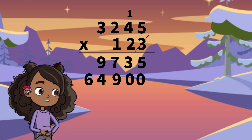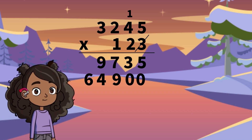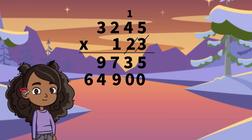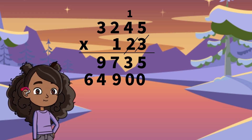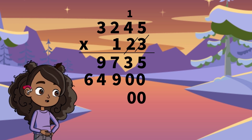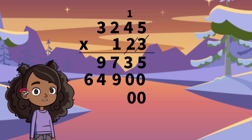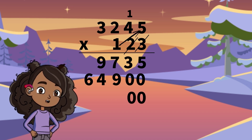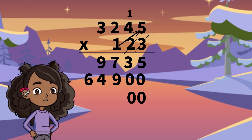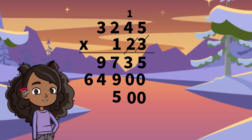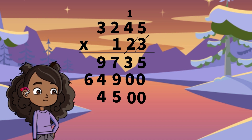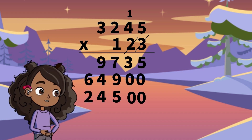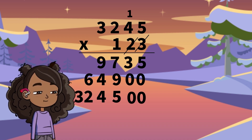We are now moving on to our next digit 1. 1 is in the hundreds place, so we need 2 placeholder 0s to make our first digit in the third answer row 100 times larger. Now let's begin! 1 times 5 equals 5. 1 times 4 equals 4. 1 times 2 equals 2. 1 times 3 equals 3. Great job!